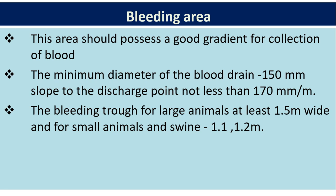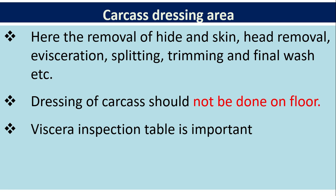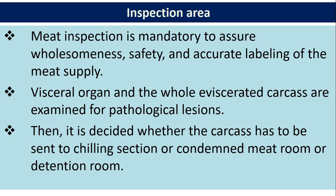In the carcass dressing area, removal of hide and skin, head removal, evisceration, splitting, trimming, and final wash are performed. Dressing of carcass should not be done on the floor, and a viscera inspection table is very important. Meat inspection is mandatory to assure wholesomeness, safety, and accurate labelling of the meat supply. Visceral organs and the whole eviscerated carcass are examined for pathological lesions, and it is then decided whether the carcass is sent to the chilling section, condemned meat room, or detention room.